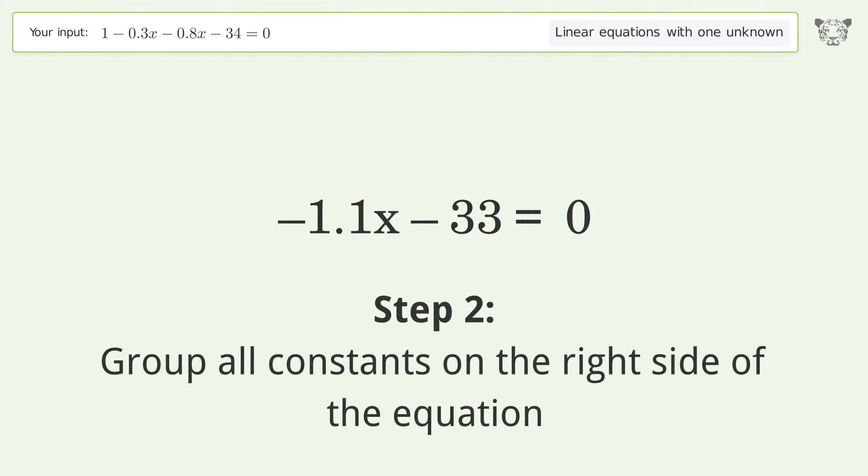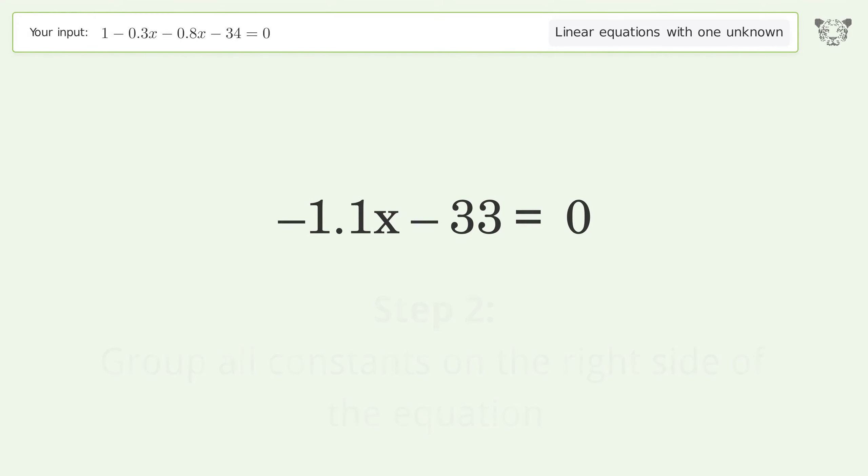Group all constants on the right side of the equation. Add 33 to both sides. Simplify the arithmetic.